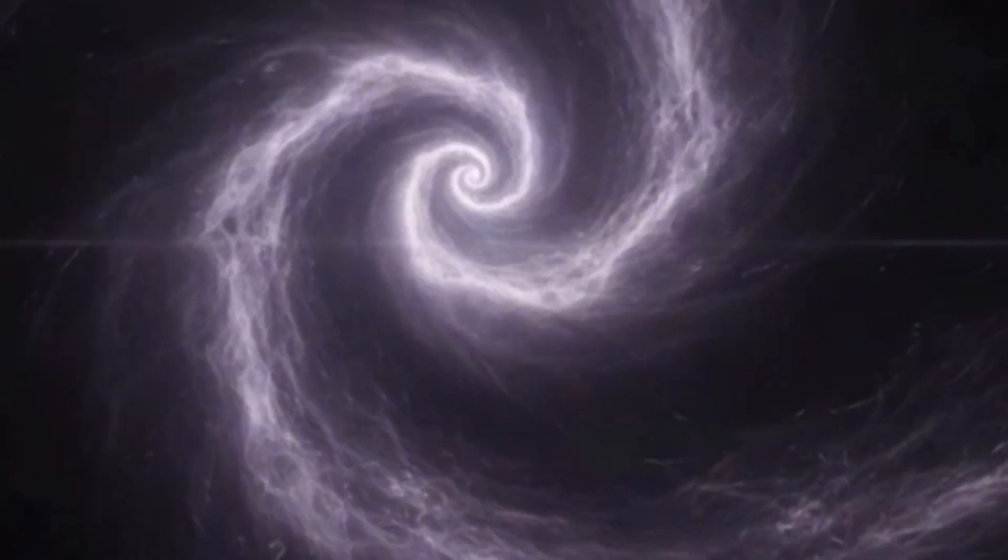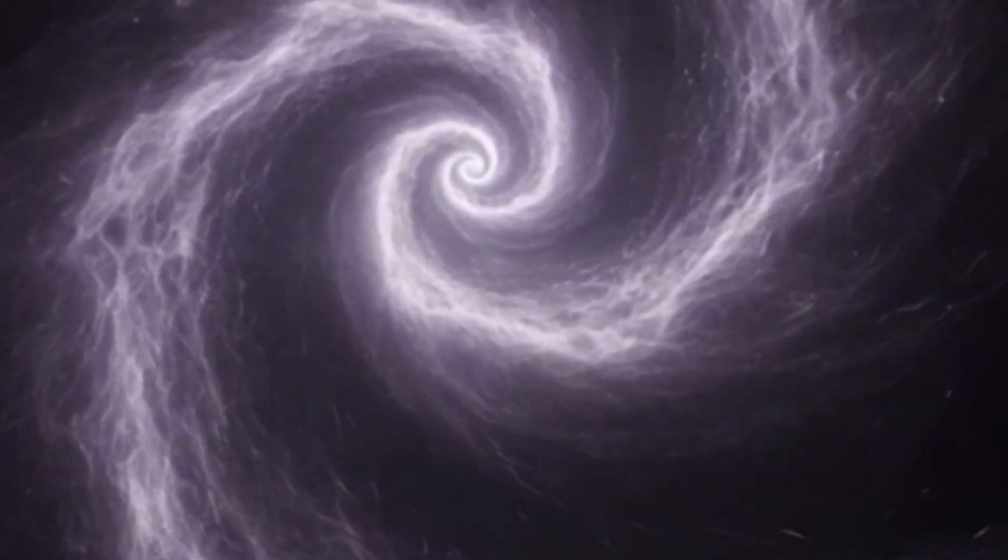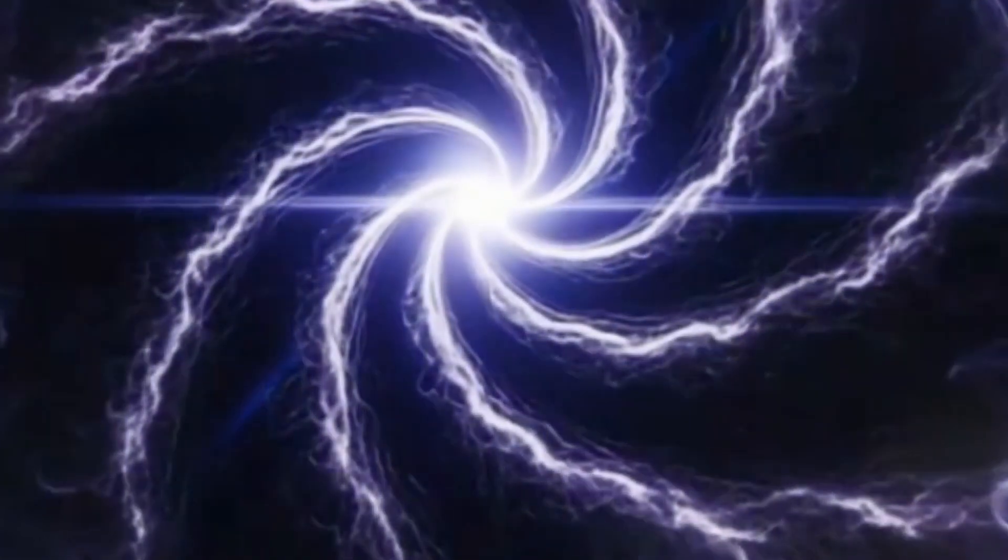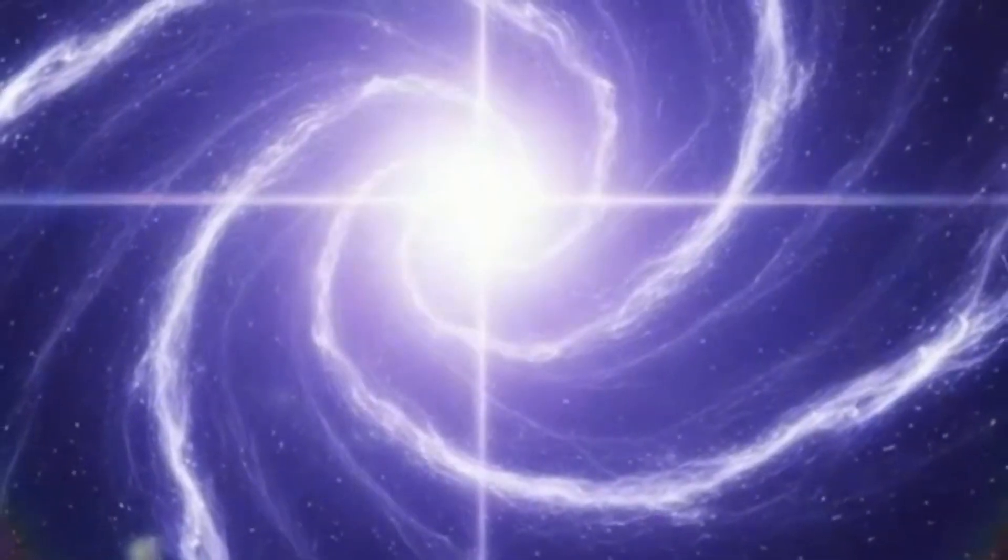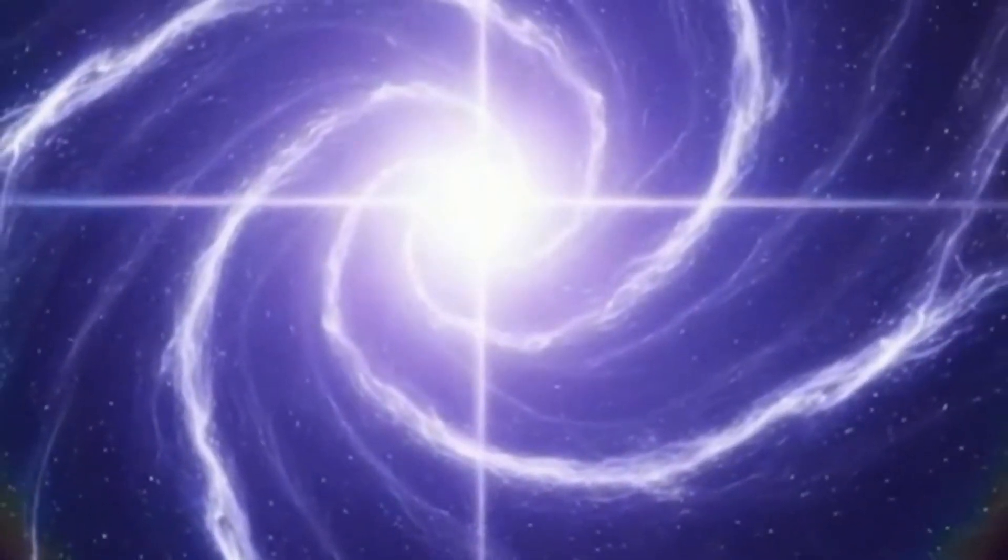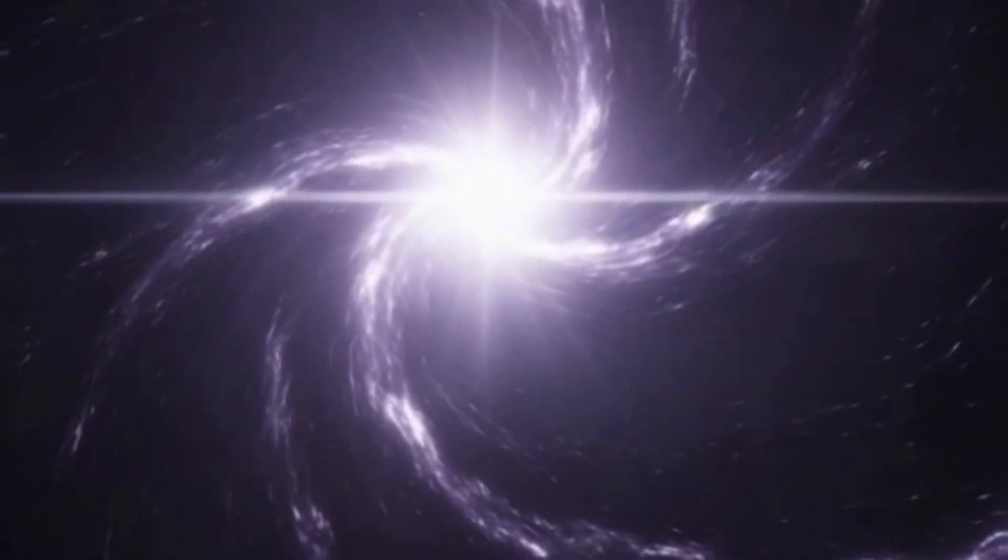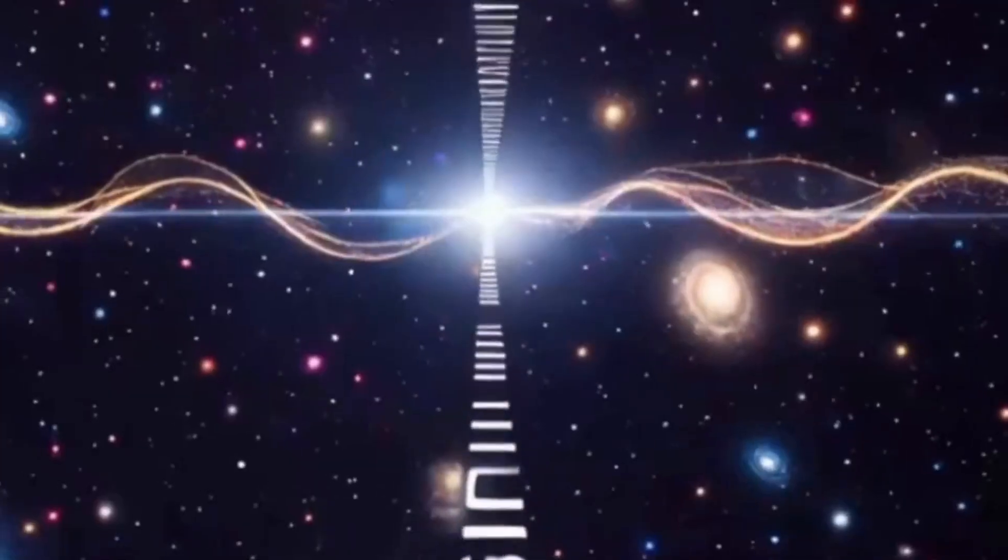To understand why, we have to remember one crucial truth about the universe. When we look deep into space, we're not seeing things as they are. We're seeing them as they were. Light takes time to travel, so when we observe something one light year away, we're looking one year into the past.